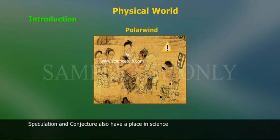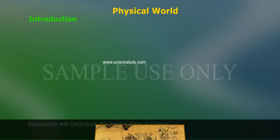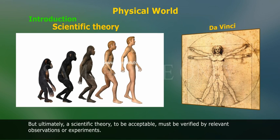Speculation and conjecture also have a place in science, but, ultimately, a scientific theory to be acceptable must be verified by relevant observations or experiments.